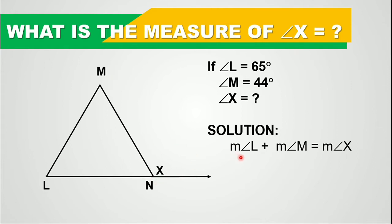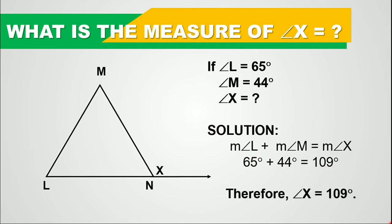The measure of angle L is 65 degrees plus the measure of angle M is 44 degrees. 65 degrees plus 44 degrees equals 109 degrees. Therefore, exterior angle X is equal to 109 degrees.